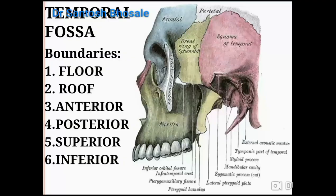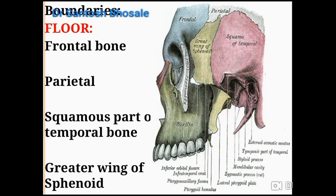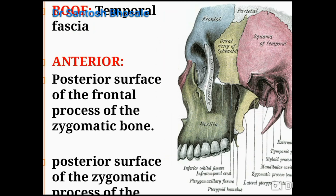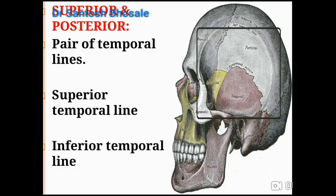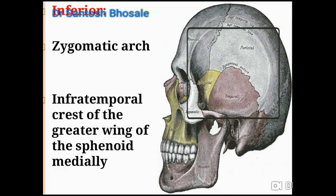The floor is formed by four bones meeting at the pterion. The roof is formed by the temporal fascia. Anteriorly, the boundary is the posterior surface of the frontal process of the zygomatic bone. Superiorly, the pair of temporal lines: the superior temporal line fades away, while the inferior temporal line continues as the posterior boundary. The inferior boundary is formed by the zygomatic arch and part of the greater wing of the sphenoid bone.